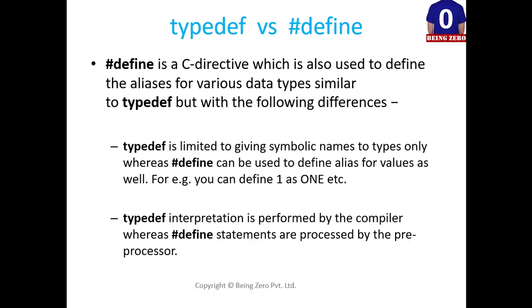#define is a C directive which is also used to define the aliases for various data types similar to typedef but with the following differences. Typedef is limited to giving symbolic name to types only whereas #define can be used to define aliases for values as well. For example, you can define one as one etc. Next is typedef interpretation is performed by compiler whereas #define statements are processed by the preprocessor. These two are the main differences between typedef and #define.